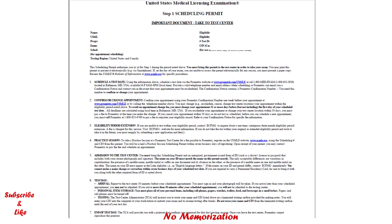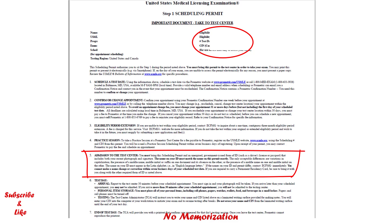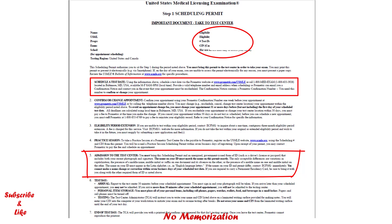ECFMG will send your scheduling permit to the email address in your ECFMG account. The scheduling permit is a very important document. It includes your assigned eligibility period, a description of the form of identification you must bring to the test center on your exam day, and instructions for scheduling your testing appointment. You can schedule your testing appointment as soon as you obtain your scheduling permit, and you must bring it to the test center on exam day.